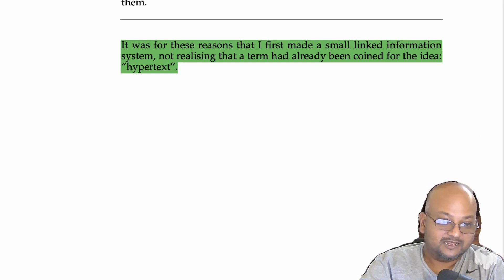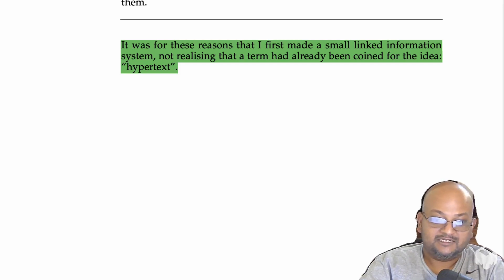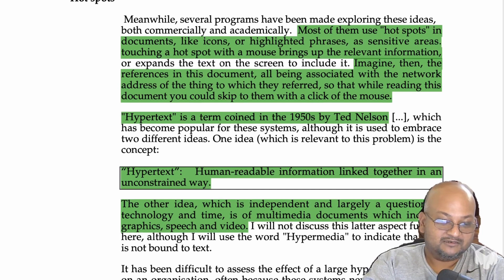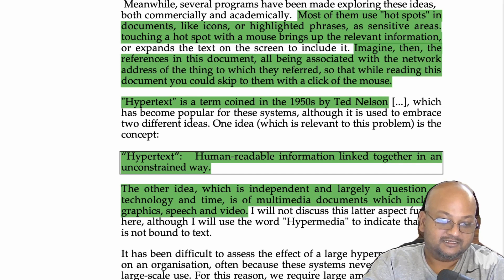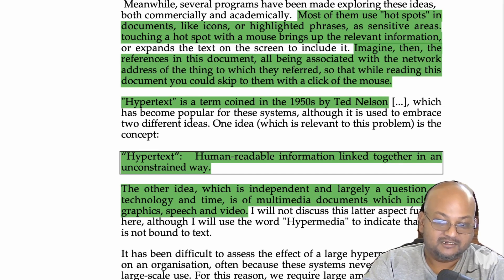And these are all the reasons that Tim Berners-Lee proposed using a linked information system at CERN. He did not realize that a term had already been coined for this — hypertext. The term hypertext had been coined back in the 1950s by Ted Nelson — you should check out his YouTube channel. His definition of hypertext was human-readable information linked together in an unconstrained way. The key idea is being linked in an unconstrained way, so that the principle along which you organize information does not constrain what the information itself can be.